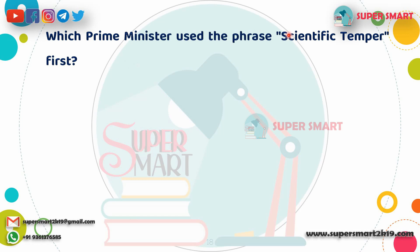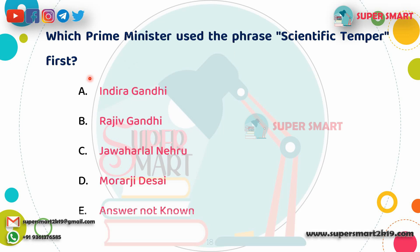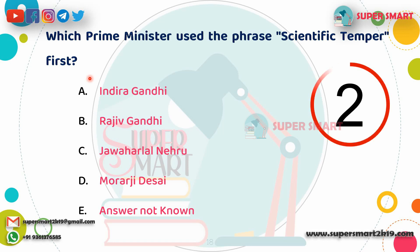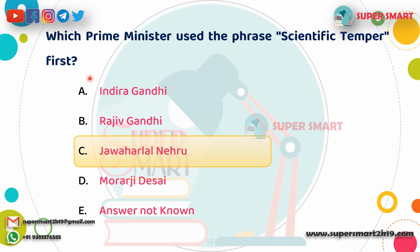Next question: Which Prime Minister first used the phrase 'scientific temper'? You already addressed this earlier — the answer is Jawaharlal Nehru.